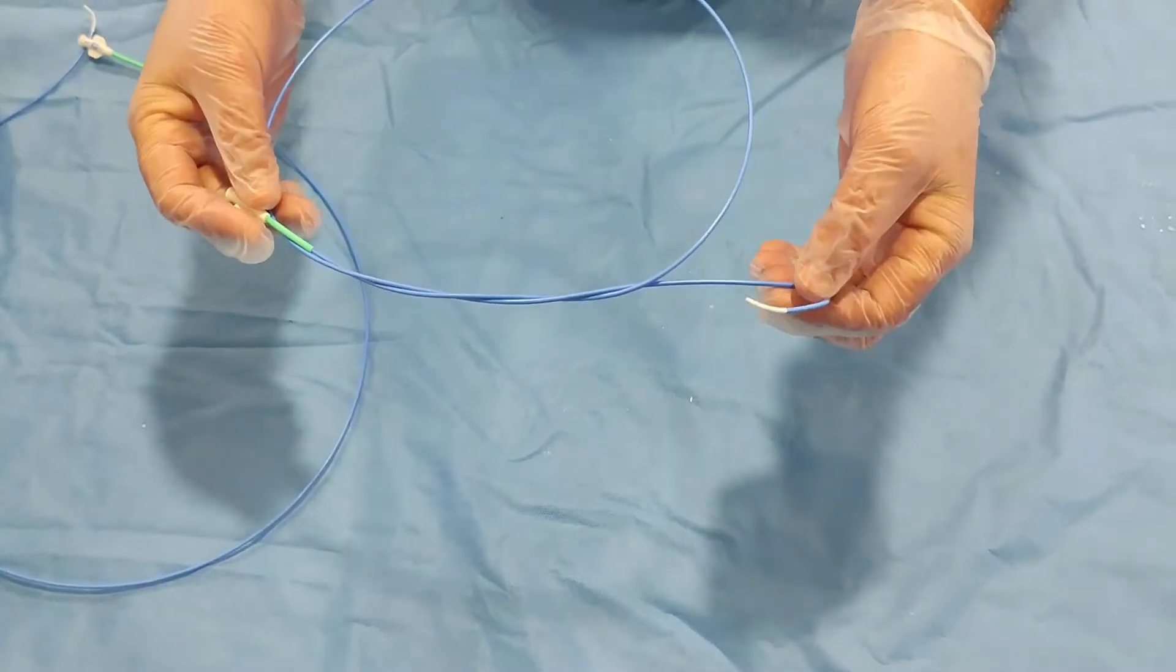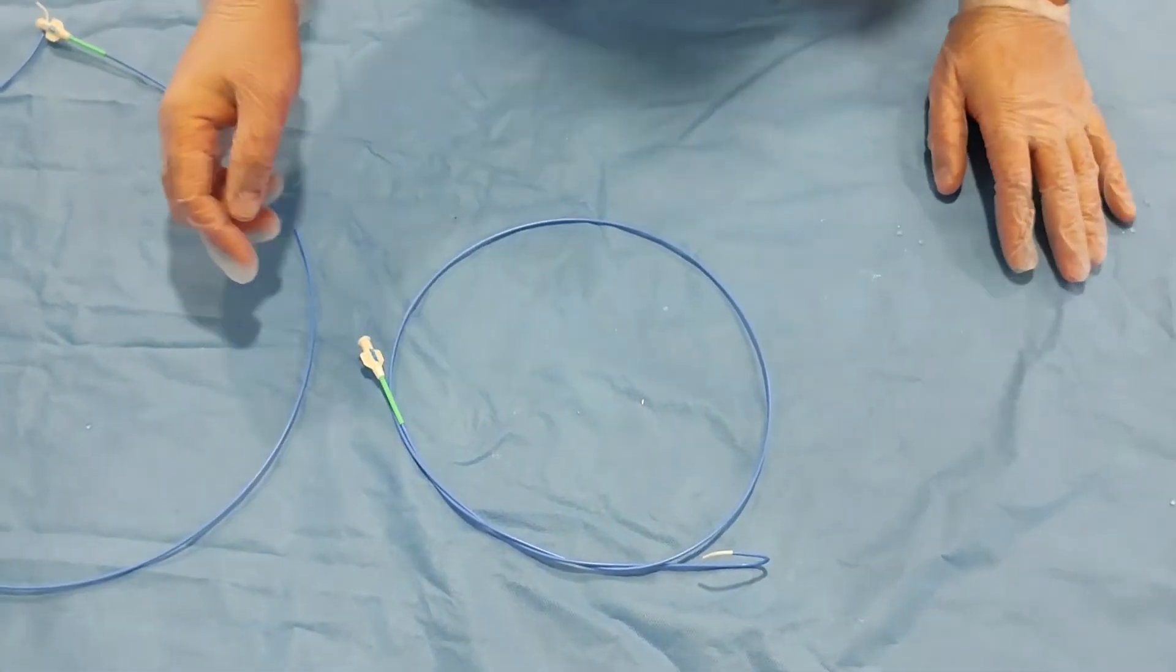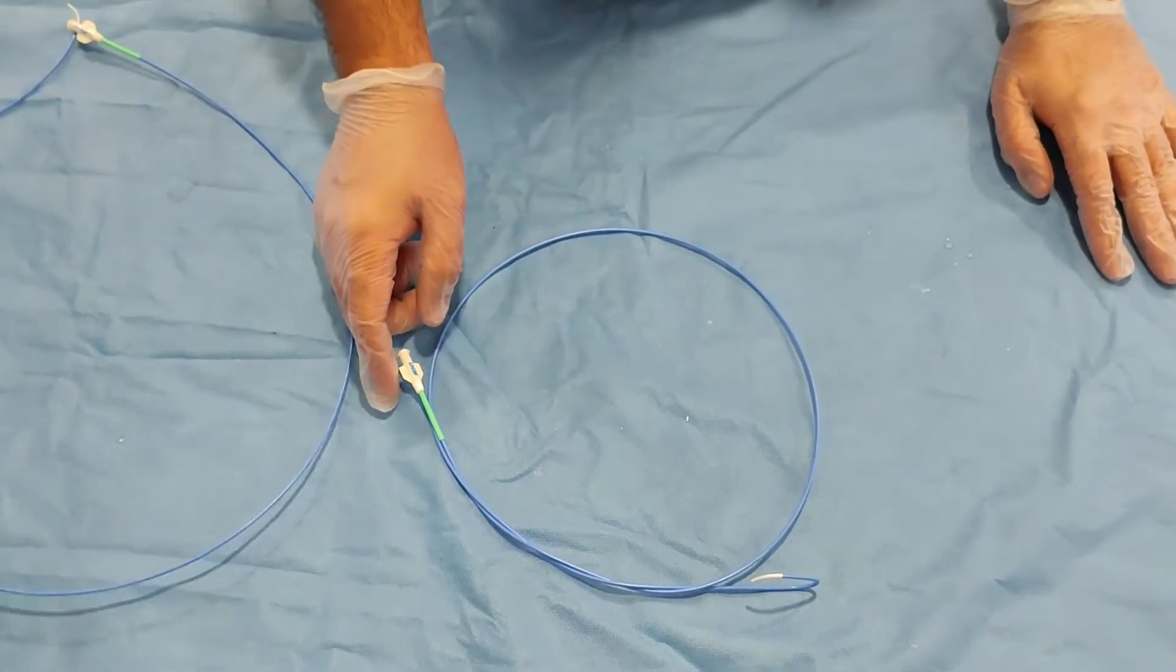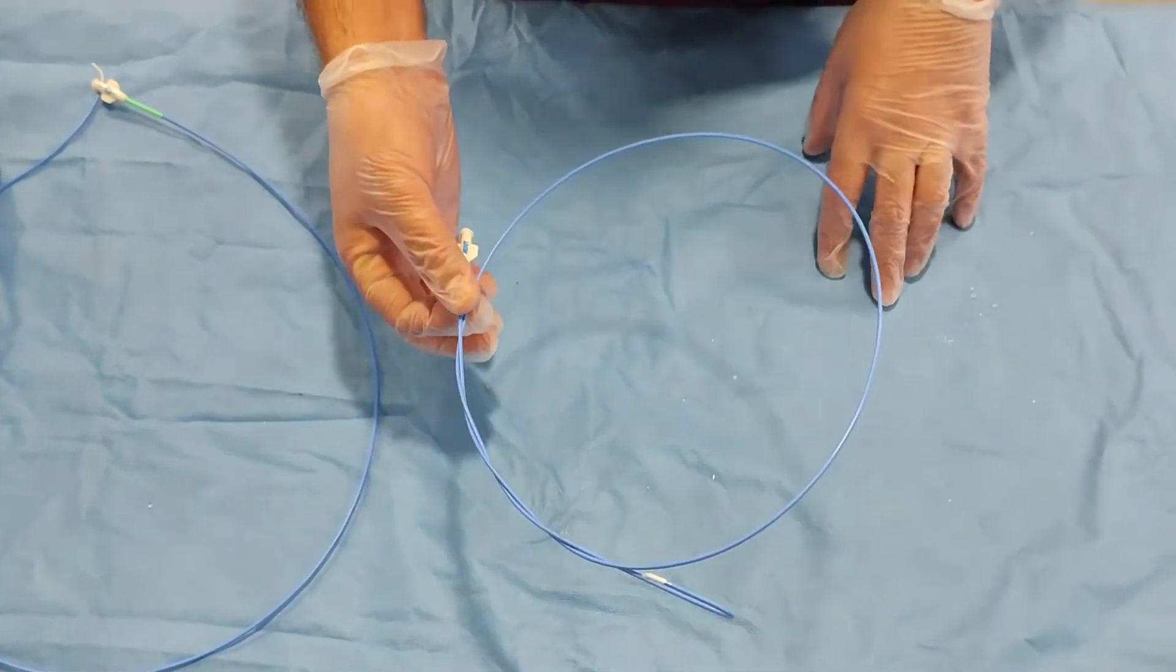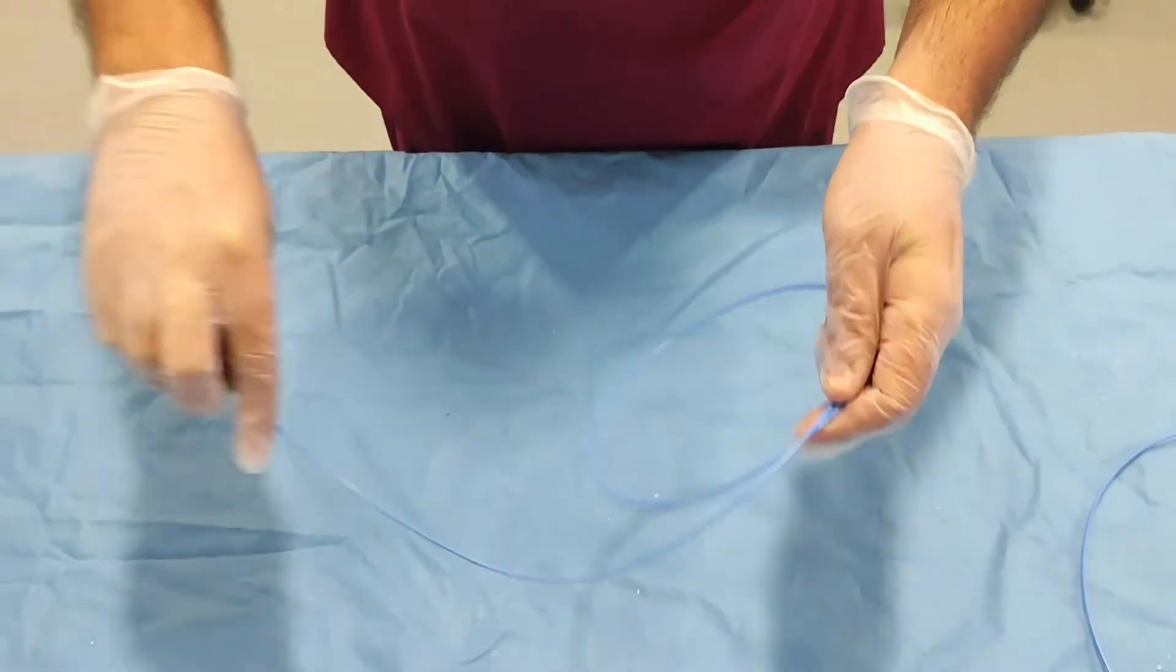It goes all the way into the coronary. If you are doing a diagnostic angiogram, you have to use the Judkins left, and if you are doing the right coronary angiogram, then you have to use the Judkins right.